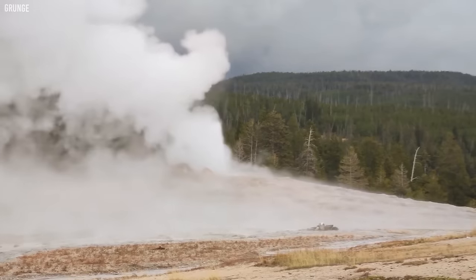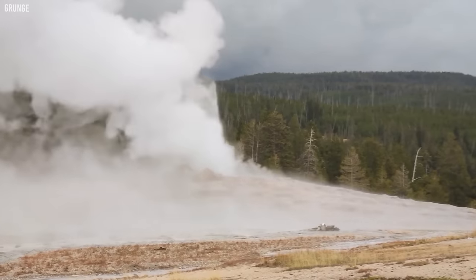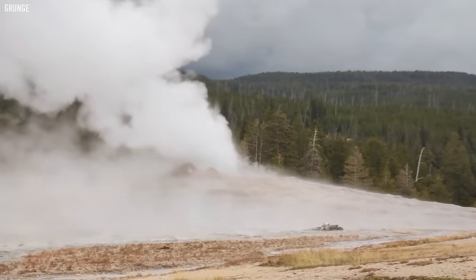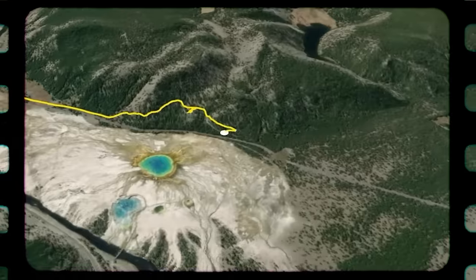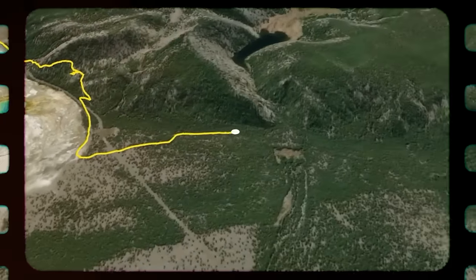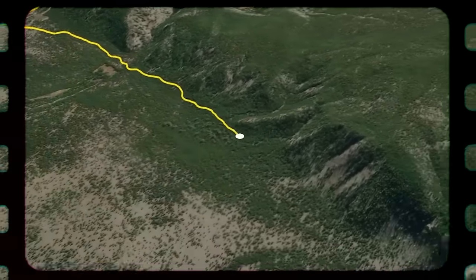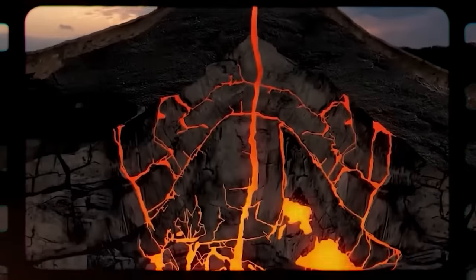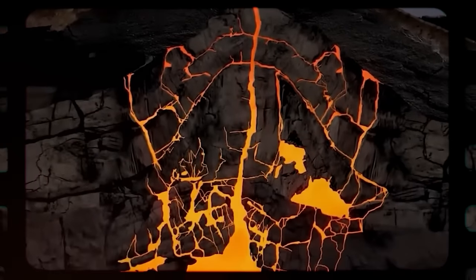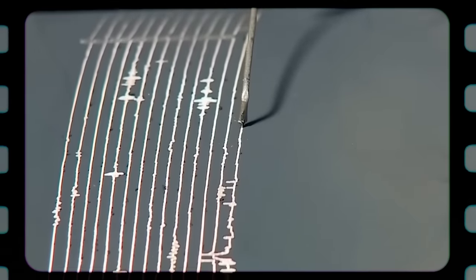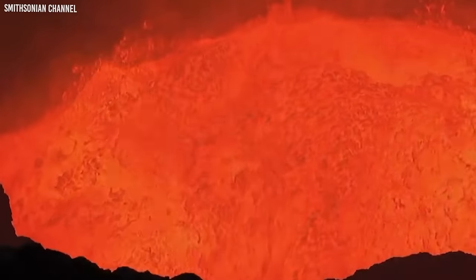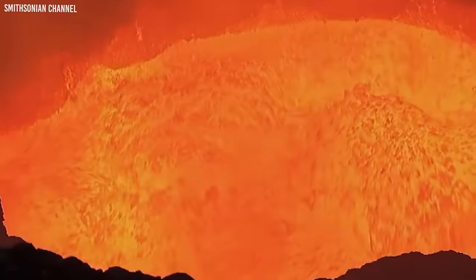One of the most significant earthquakes in the region was the Hebgen Lake earthquake in 1959, which had a magnitude of 7.3 and resulted in 28 fatalities and extensive damage. The presence of the Yellowstone caldera along with increasing frequency of seismic activity has raised concerns about the dormant supervolcano's potential eruption.